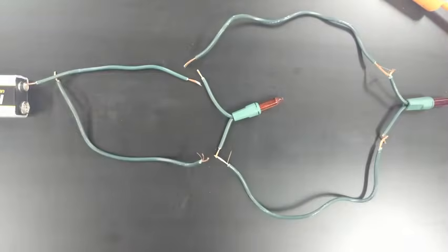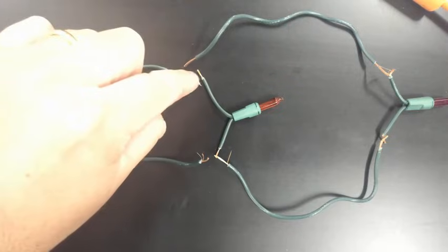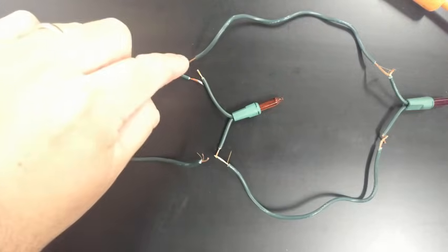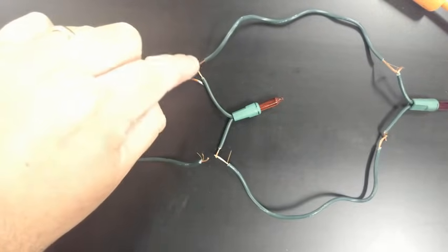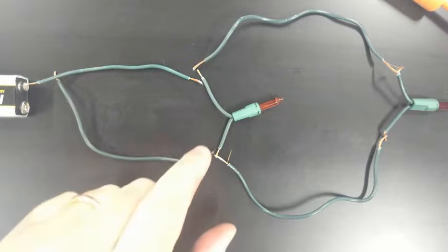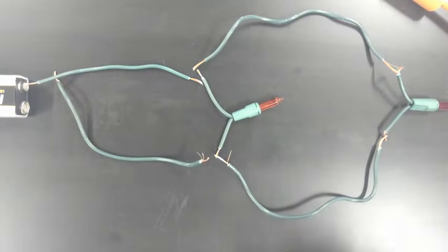And so when you put these together, you're going to have to first intertwine these two copper wires and then put this one on top of it. So that they're all three connected to each other. And that's something you didn't have with series circuits.